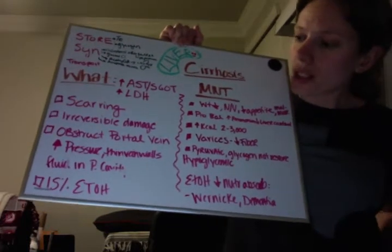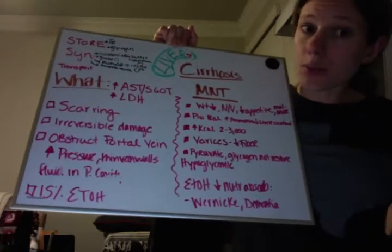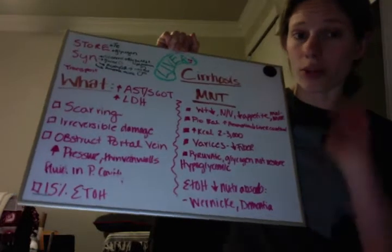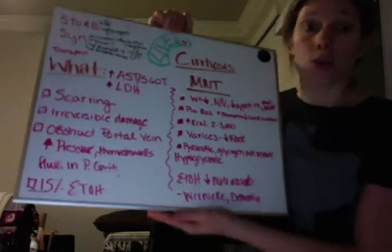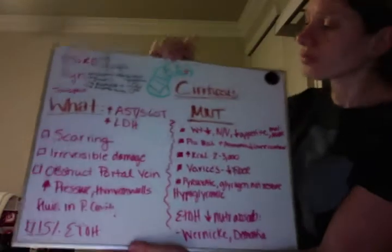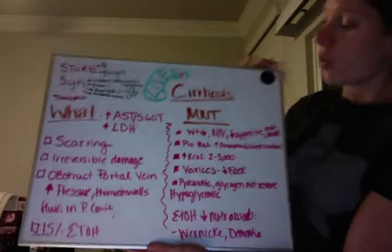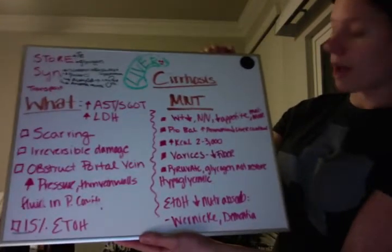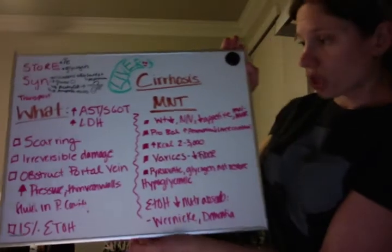In cirrhosis, 15% of patients will be heavy drinkers. Alcohol plays a huge part in cirrhosis. Nutritionally, some signs and symptoms we might see include weight loss, nausea, vomiting, decreased appetite, and possibly even malnutrition.